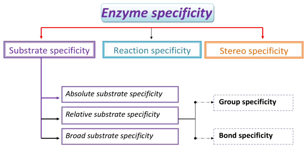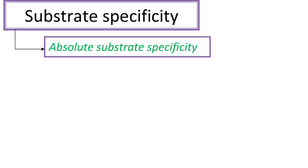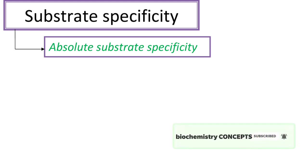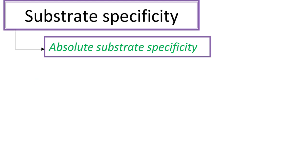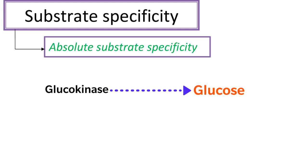Starting with substrate specificity — first, absolute substrate specificity. Here, enzymes act only on one substrate. That is why it is called absolute substrate specificity. For example, for glucokinase, glucose is the only substrate.